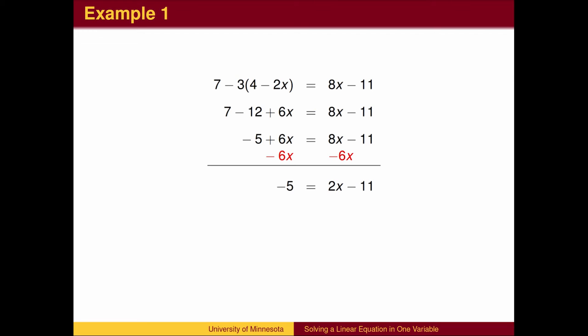We can now eliminate one of the variable terms by subtracting the same quantity from both sides. In this case, we subtract 6x from both sides, though it would work equally well to subtract 8x on both sides to get the variable in the left-hand side of the equation on the bottom line.